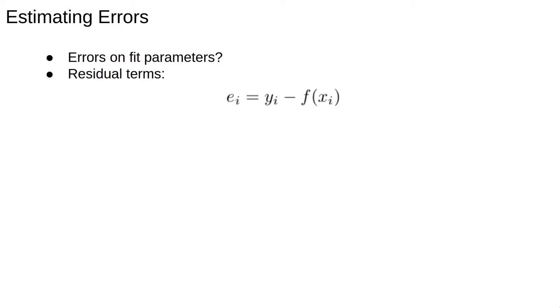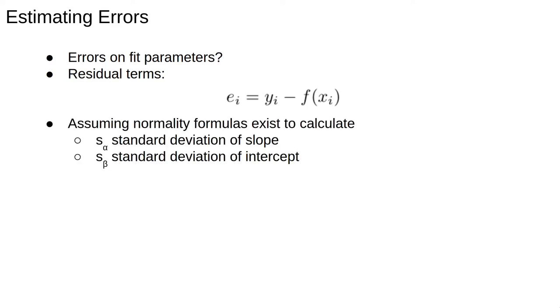The most standard way is to assume that the residuals ei equals yi minus f of xi are normally distributed. There are formulas to calculate the standard deviation of the slope and the standard deviation of the intercept. For example, the formula for the standard deviation of the slope, s alpha, is roughly the average deviation of the model from the data divided by the variance in the x-direction. So the error will be small if the model closely matches the data, or we have a big spread of values for our input variable.